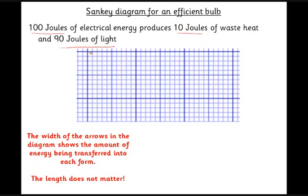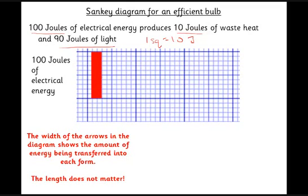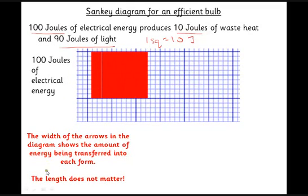And you start drawing an arrow. Well, if you look at my scale, I've got a hundred joules. Clearly I can't do one square equals one joule, but I might do a scale like one square equals 10 joules. If I do that, then my hundred joules of electrical energy becomes an arrow which is 10 squares wide.